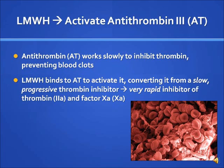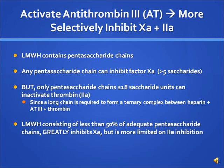Low molecular weight heparin activates and facilitates the action of antithrombin 3. Antithrombin works slowly to inhibit thrombin, preventing blood clots. Low molecular weight heparin binds to antithrombin to activate it, converting it from a slow progressive thrombin inhibitor to a very rapid inhibitor of thrombin and factor 10a. This results in a more selective inhibition of factor 10a than factor 2a. Low molecular weight heparin contains pentasaccharide chains — any pentasaccharide chain can inhibit factor 10a. However, only chains greater than or equal to 18-saccharide units can inactivate thrombin. Therefore, a long chain is required to form a ternary complex between heparin, antithrombin 3, and thrombin. Low molecular weight heparin consists of less than 50% of the adequate pentasaccharide chains, greatly inhibiting factor 10a but limiting factor 2a inhibition.